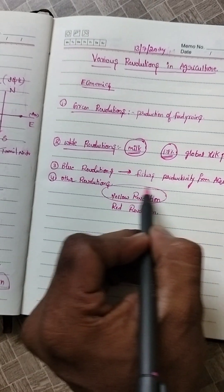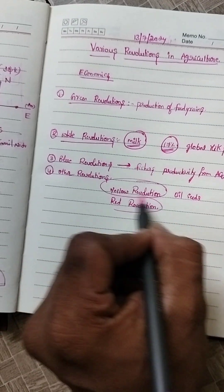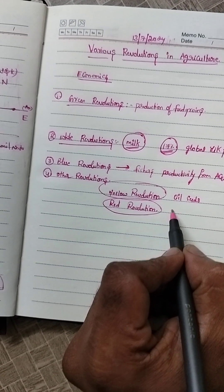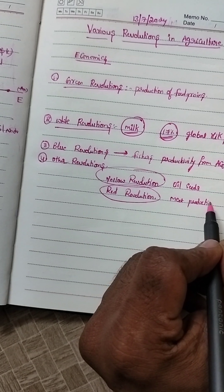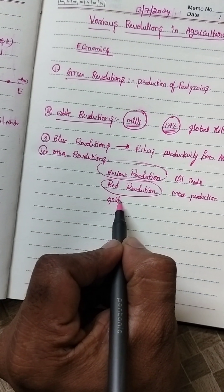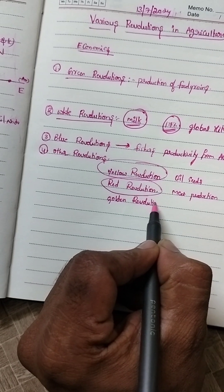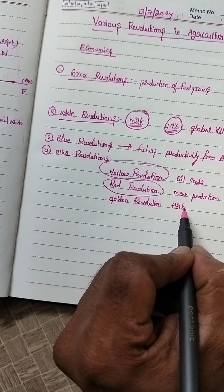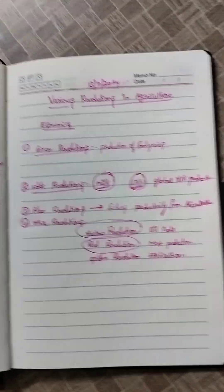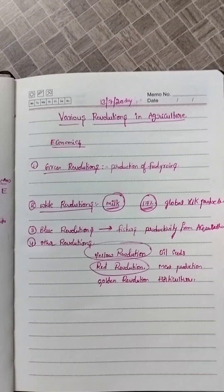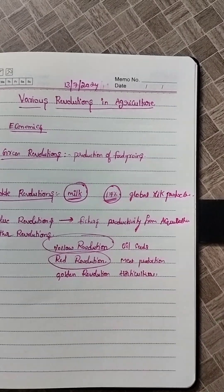The Yellow Revolution is for oilseeds, the Red Revolution is for meat production, and the Golden Revolution is for horticulture.